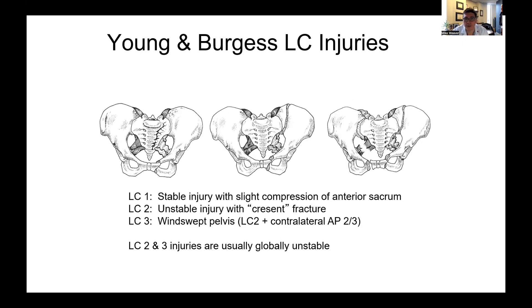Lateral compression injuries are very common in motor vehicle accidents, particularly with a side impact. The Young and Burgess classification here doesn't really describe how bad the injury is, but really just what is broken. LC1 fractures involve a fracture of the sacrum with unilateral rami fractures — these can be either stable or unstable depending on the amount of displacement. LC2 fractures involve what's called a crescent fracture, which is a fracture dislocation of the sacroiliac joint coupled with those rami fractures, and these are more often unstable and often require open reduction.